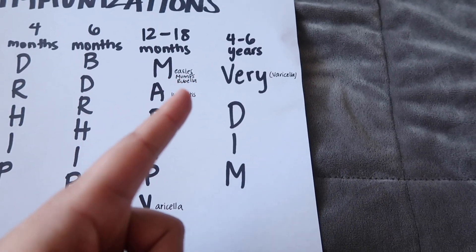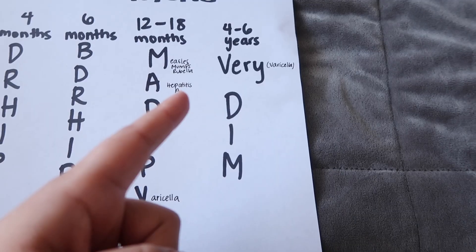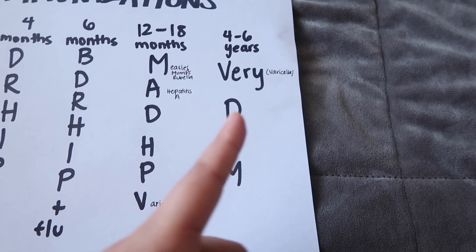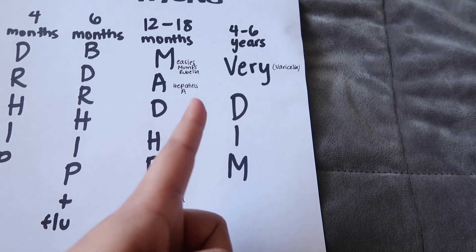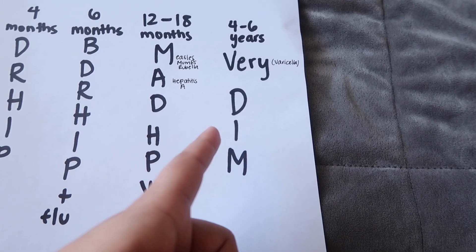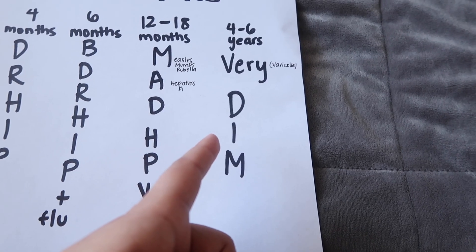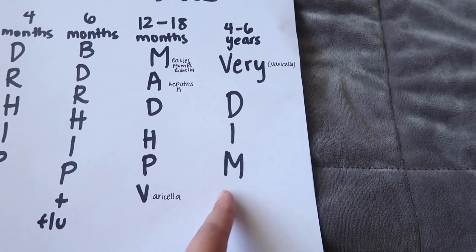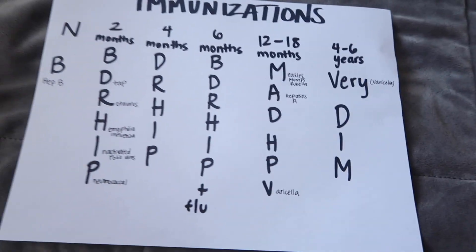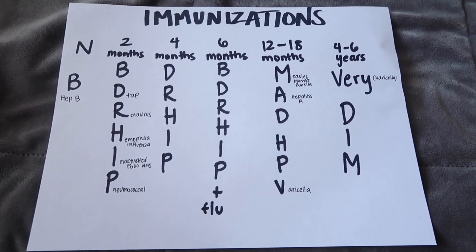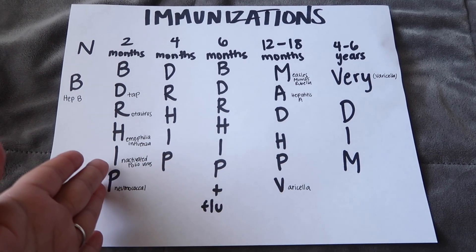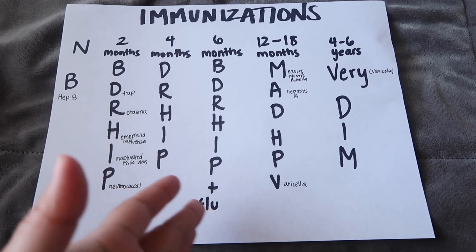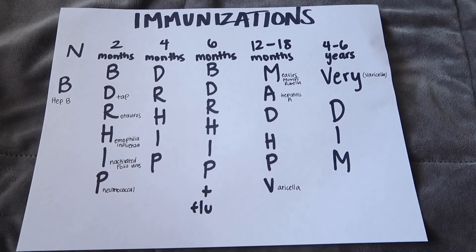Then you move on to four to six years, and the mnemonic you use is 'Very Dim': V is for Varicella, D is for DTaP, I is for Inactivated Poliovirus, and M is for MMR. So to recap, the mnemonics are: B (newborn), B Dr. Hip (2 months), Dr. Hip (4 months), B Dr. Hip plus flu (6 months), MAD HPV (12-18 months), and Very Dim (4-6 years).